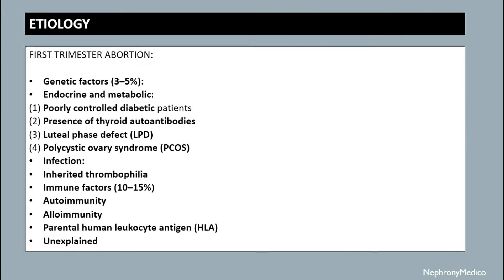The etiology of first trimester abortion includes genetic factors, endocrine and metabolic factors such as poorly controlled diabetes, presence of thyroid autoantibodies, luteal phase defect, polycystic ovarian syndrome. Others include infection, inherited thrombophilia, immune factors, autoimmunity, alloimmunity, parental human leukocyte antigen, and unexplained causes.